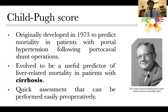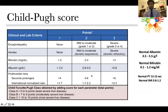The Child-Pugh score was originally developed in 1973 to predict mortality in patients with portal hypertension following portal caval operations. It evolved to be a useful predictor of liver-related mortality in patients with cirrhosis, so it's not applicable in non-cirrhotic patients. It's a quick assessment that can be performed easily preoperatively to prioritize patients for intervention. It was invented by Charles Gardiner and depends on bilirubin level, albumin level, PT/INR, encephalopathy, and presence of ascites — combining these gives meaningful assessment.